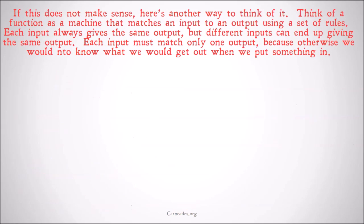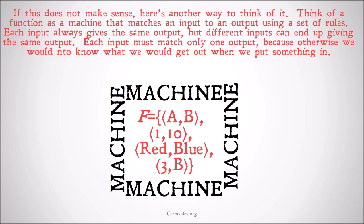So if this doesn't make sense, here's another way to think of it. Think of a function as a machine that matches an input to an output using a set of rules. Each input always gives the same output, but different inputs can end up giving the same output. Each input must match only one output, because otherwise we would not know what we're going to get when we put something in and we always follow the same rational set of rules.